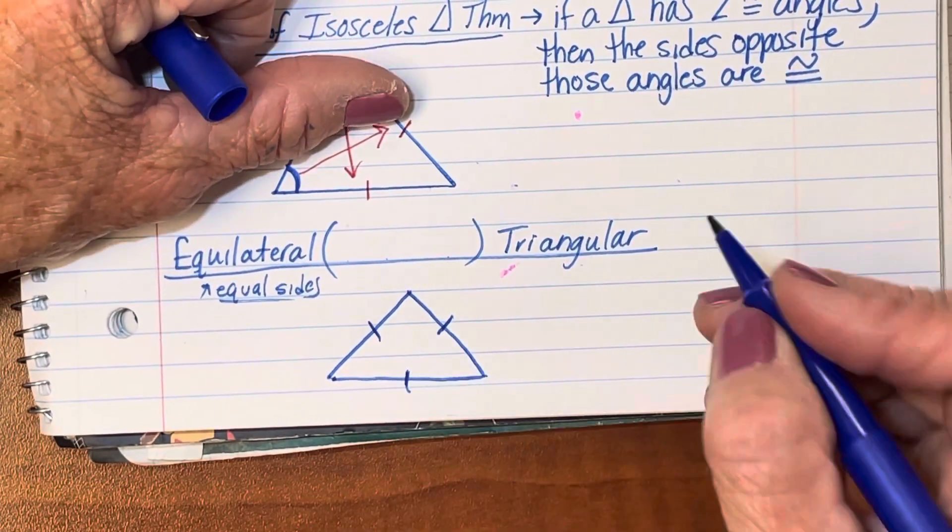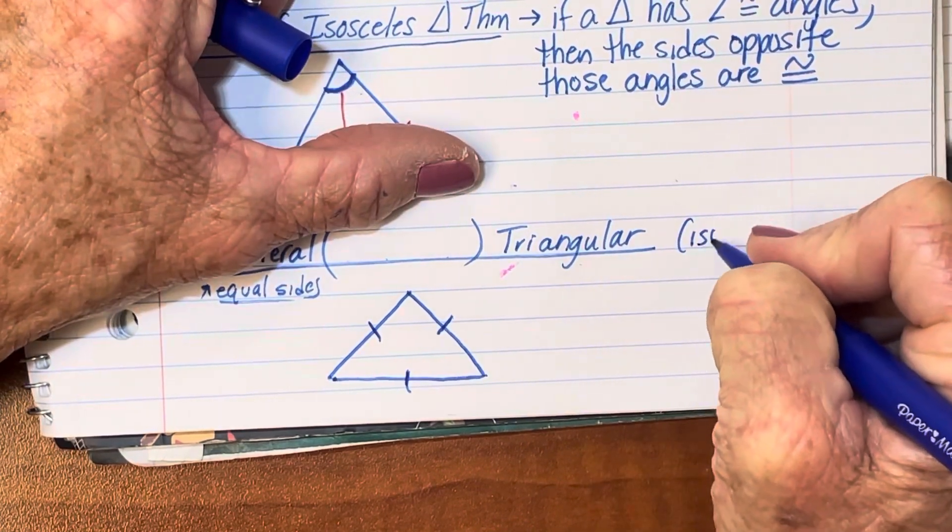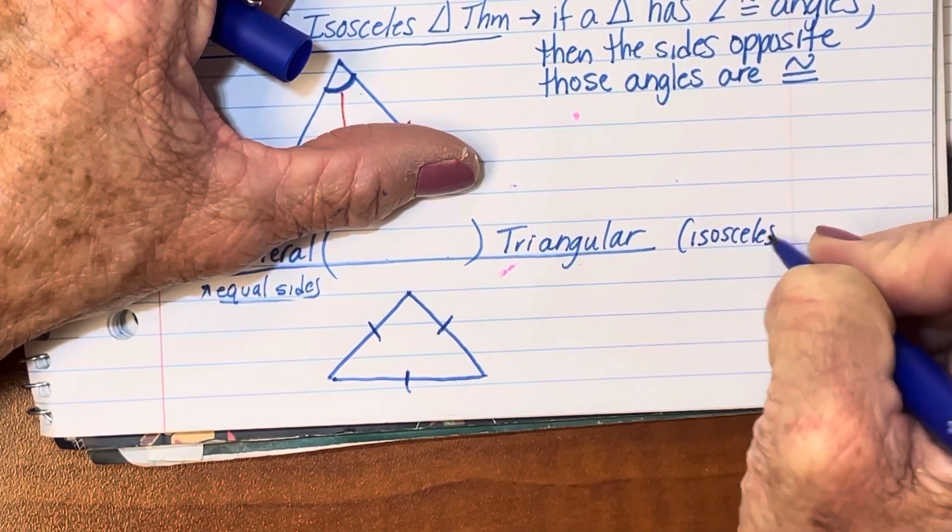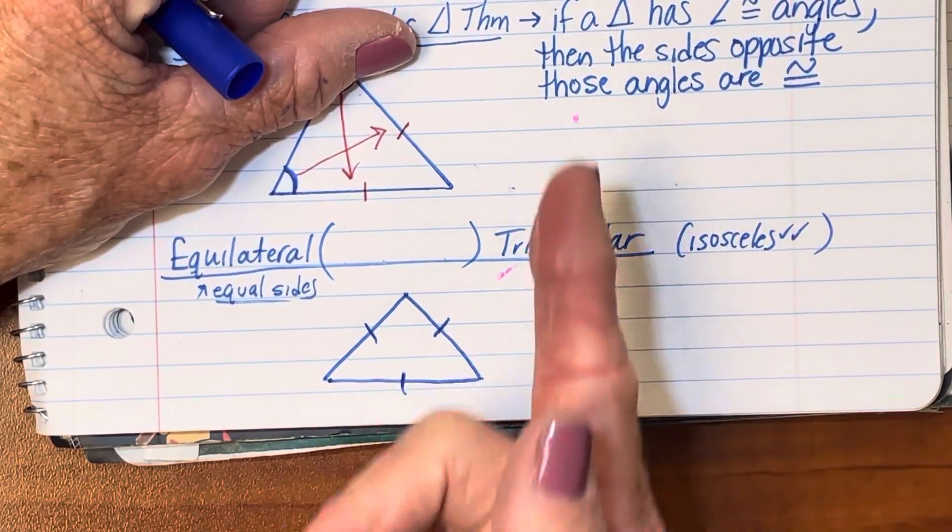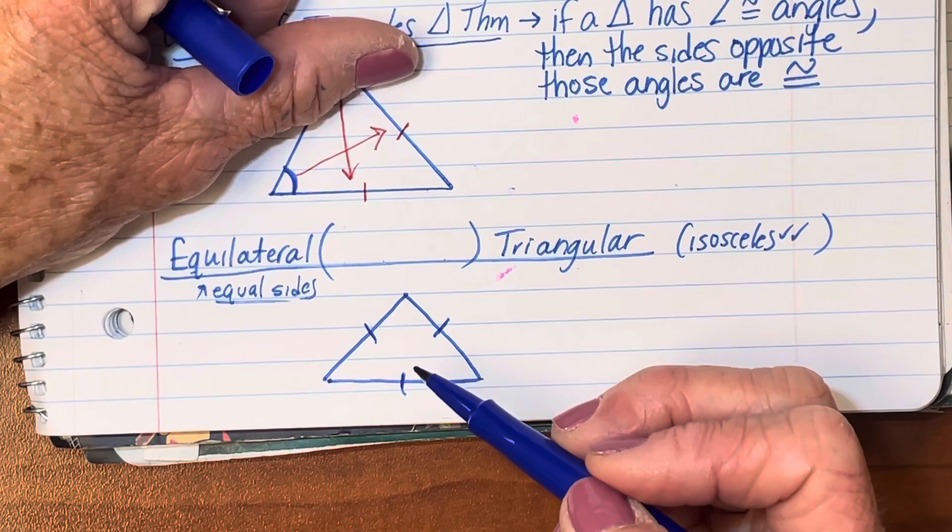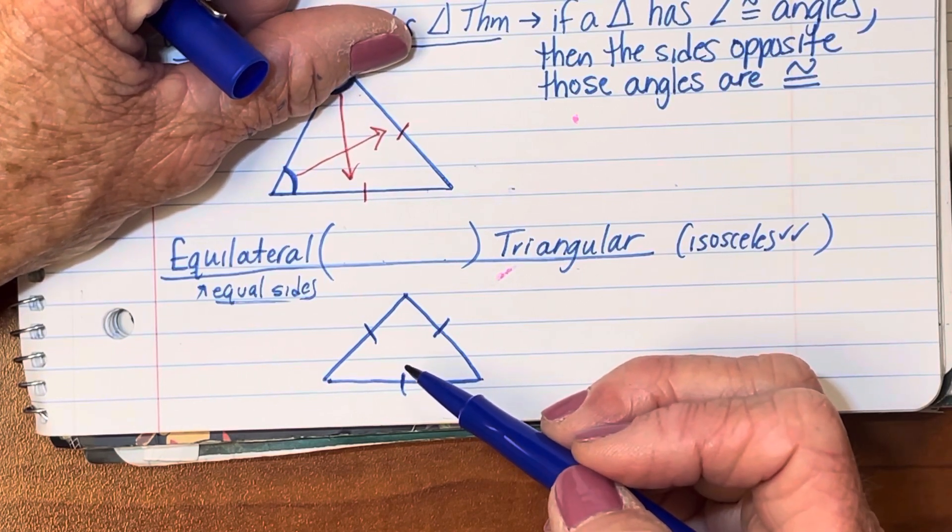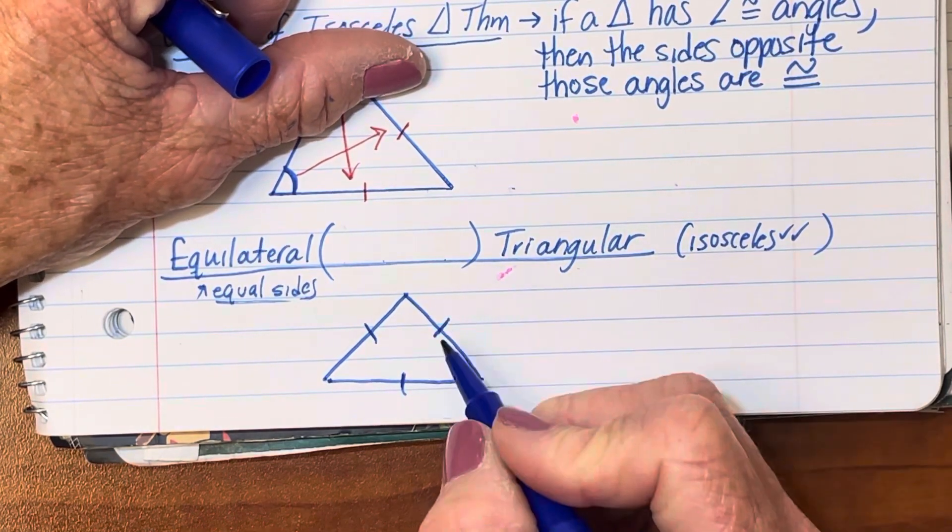Is this isosceles? Well, the answer is it's also isosceles because it has at least two congruent sides. So everything that's true about the isosceles triangle up there will automatically be true about this equilateral triangle.